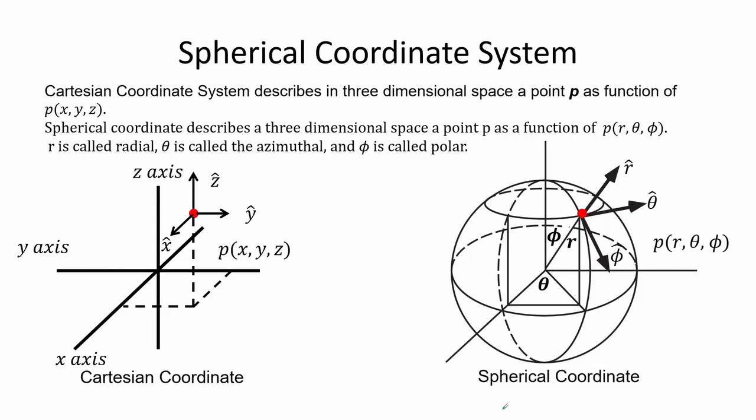The Cartesian coordinate system describes a function of x, y, z parameters to describe a three-dimensional space, where we can describe point P as P(x, y, z). Spherical coordinates describe the same three-dimensional space using parameters r, theta, and phi, where the same point is written as P(r, θ, φ). Here r is the radial distance, theta is the azimuthal angle, and phi is the polar angle. Some problems are easier solved using spherical coordinates than Cartesian coordinates; you will learn more about these in your math courses.